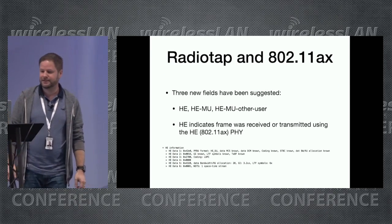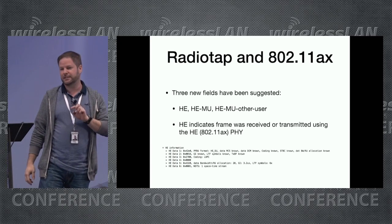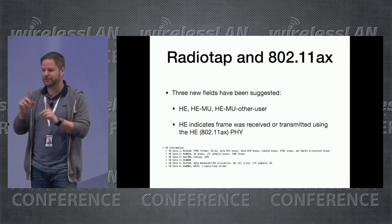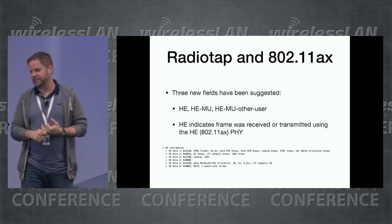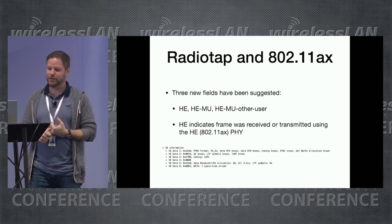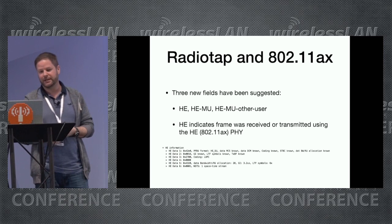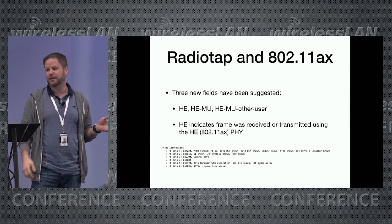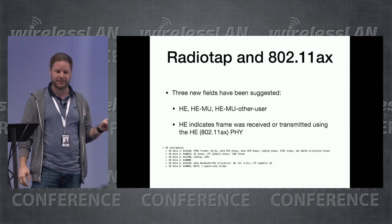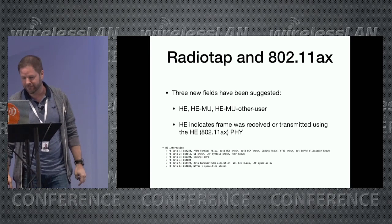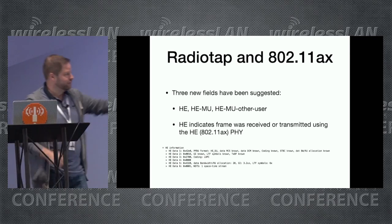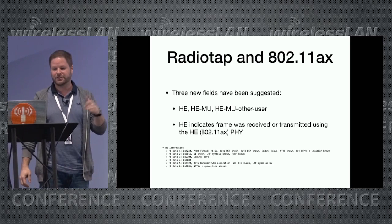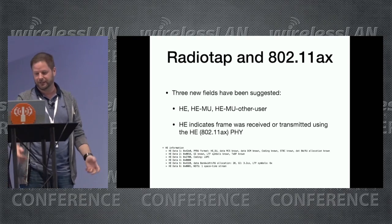For 802.11ax, three new radiotap fields have been suggested — they are still being tweaked as the standard is also being developed. We have the HE (high efficiency) field, HEMU, and HEMU other user. The main one is the HE field, which indicates that the frame was received or transmitted using the 802.11ax PHY. As I said, this is still being developed, so it may change — it's a suggested field, not a finalized defined field yet.